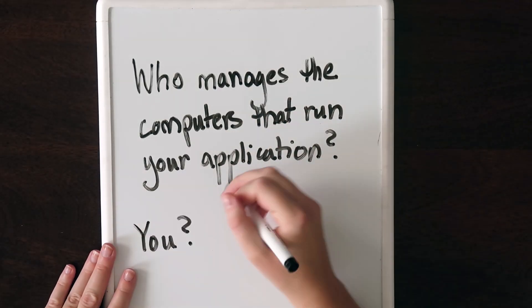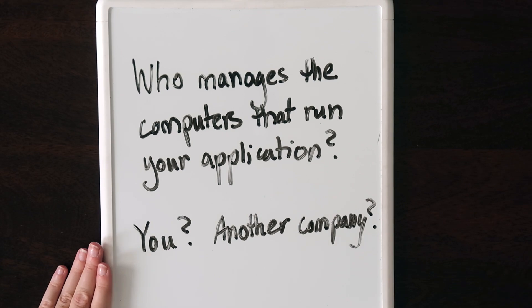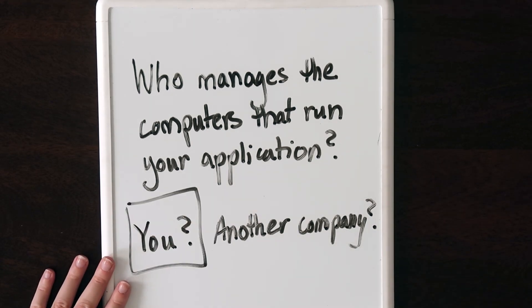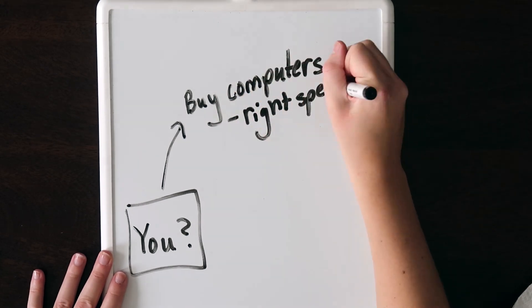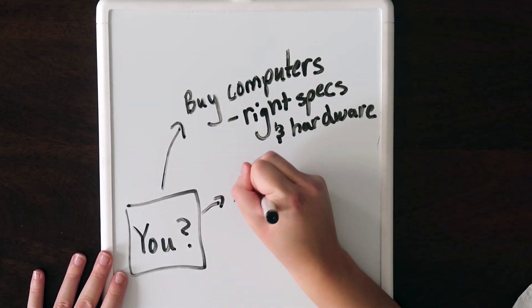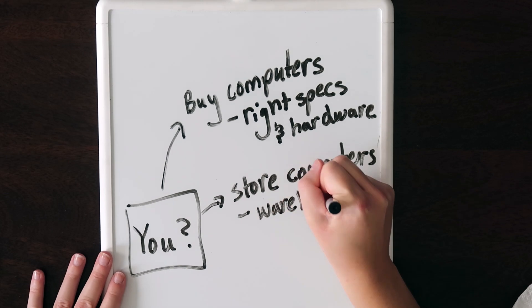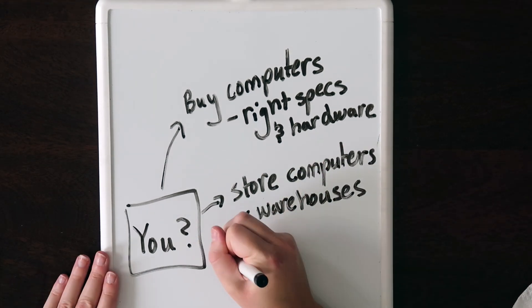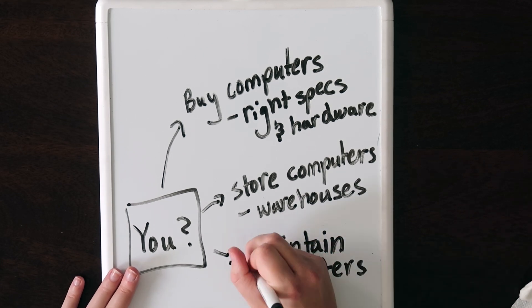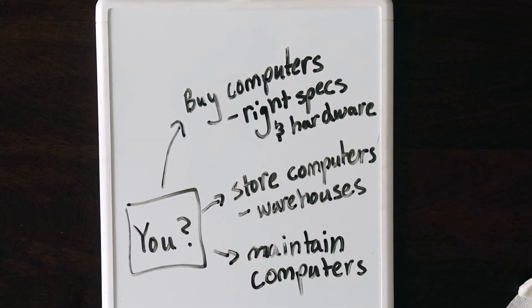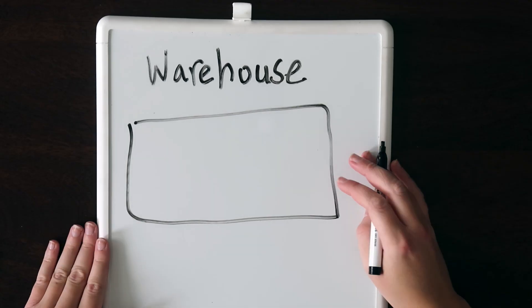Previously, it was entirely the responsibility of the software company. The company had to buy the computers with the right specs they thought they'd need. They had to upgrade the computers and keep the hardware up to date. They also had to make sure their apps stayed up and running on every single computer, and that there wasn't some fire in some warehouse. While you might think that's easy — let me just go buy some computers — it's actually quite complicated.